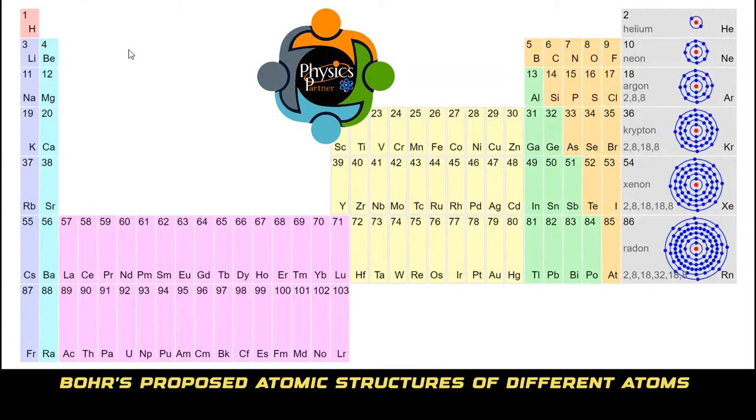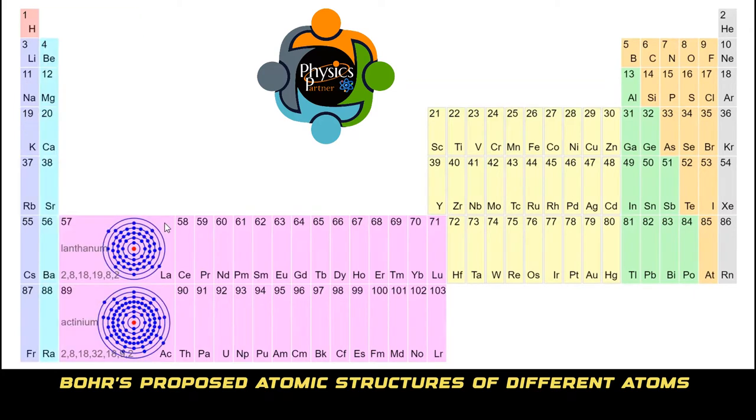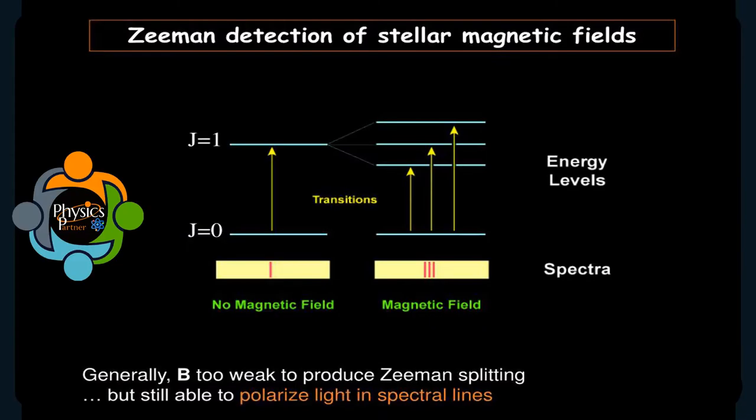Number two, the Bohr atomic model theory made correct predictions of smaller sized atoms like hydrogen, but poor spectral predictions are obtained when larger atoms are considered. Number three, it fails to explain the Zeeman effect when the spectral line is split into several components in the presence of a magnetic field.